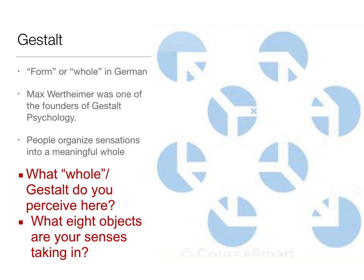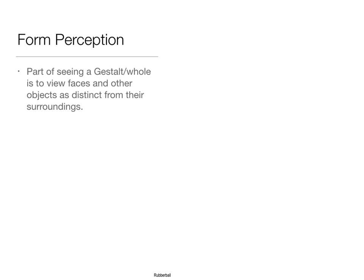The whole is more than the sum of its parts — that's the idea behind gestalt theory. How we group things is more meaningful than the individual pieces. Part of seeing this whole allows us to view faces and objects as distinct from their surroundings, and this is what we call figure-to-ground: how we determine a figure out of the background.